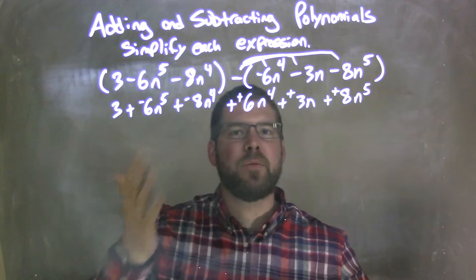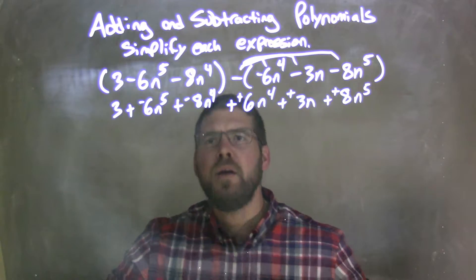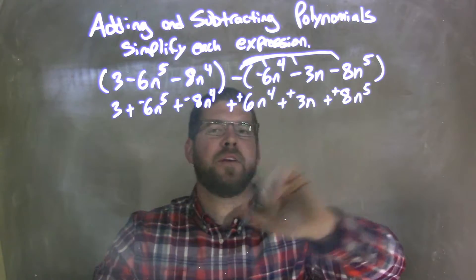And distribute that negative over here as plus a positive 8n to the 5th. So I find that if I make everything adding a negative plus a positive here in addition, I find I don't make as many mistakes. We all make mistakes, right?